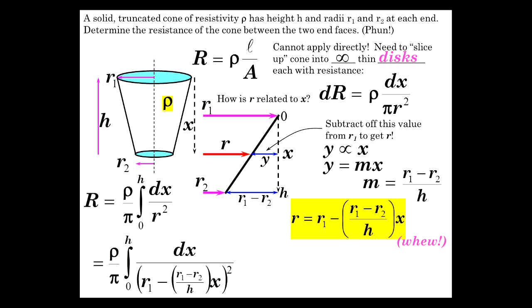Let's simplify it down a little bit by substituting something in for this nastiness here. And so that would be alpha. So rho over pi, integral from 0 to h, dx over r1 minus alpha x, quantity squared.